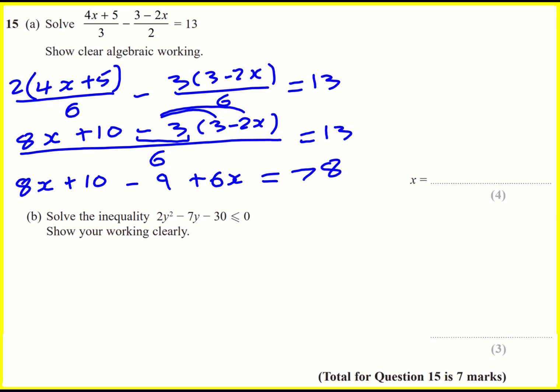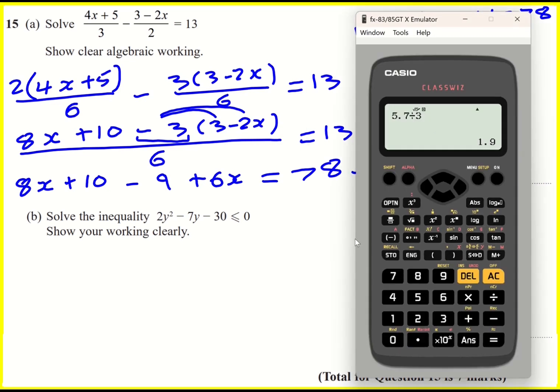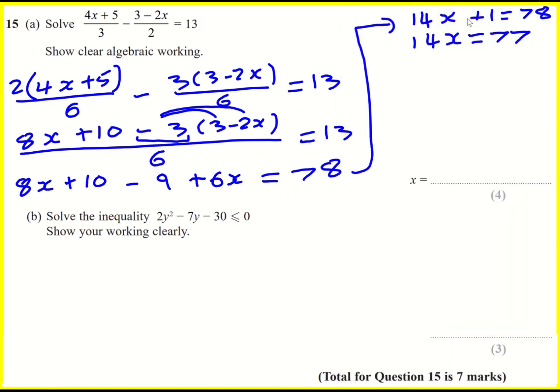And then 13 times 6 will give 78. This is much nicer now. So 14x plus 1 is equal to 78. So 14x is 77, and 77 divided by 14 gives an answer of 5.5. You could write 11 over 2. I normally actually leave things as fractions, but either one of those is okay.